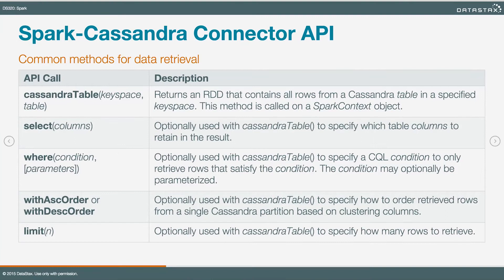Let me show you just a few API methods. In order to meet the challenge I've laid out, we need to know a few things about how to interact with Cassandra. We're going to look at one method on the Spark Context object that lets us read data out of Cassandra, and then a few methods that let us play around with that. The cassandraTable method, which we call on the Spark Context, takes a keyspace and a table, and returns an RDD containing all of the rows of that table. If we just call that method on its own, it will literally return all of those rows as records in an RDD.